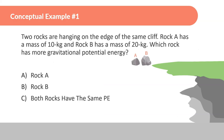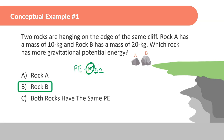Conceptual example: Two rocks hang on the edge of the same cliff. Rock A has a mass of 10 kg and Rock B has a mass of 20 kg. Which has more gravitational potential energy? The answer is B. Gravity and height are the same in both scenarios, but Rock B has more mass, so it has more potential energy.